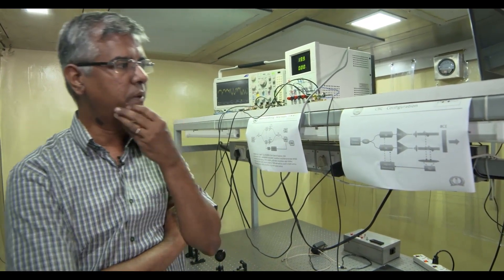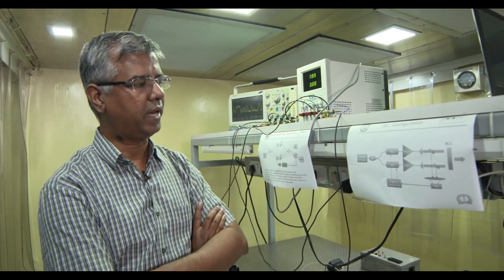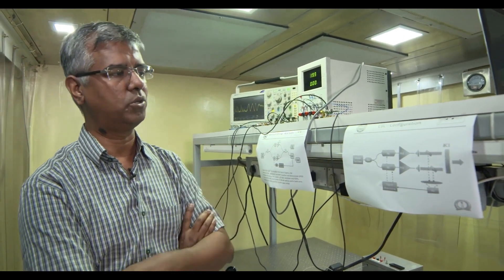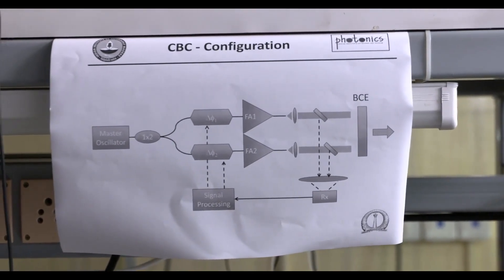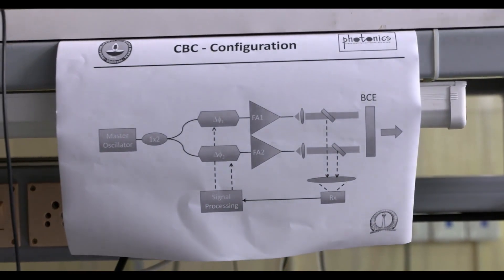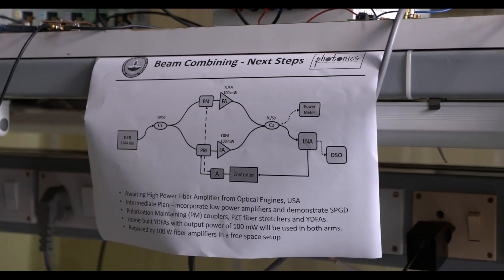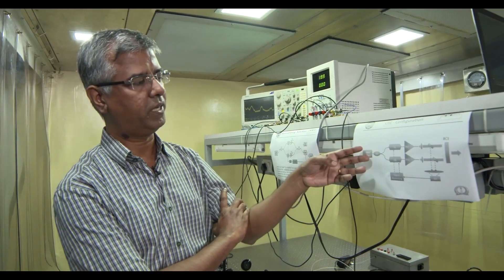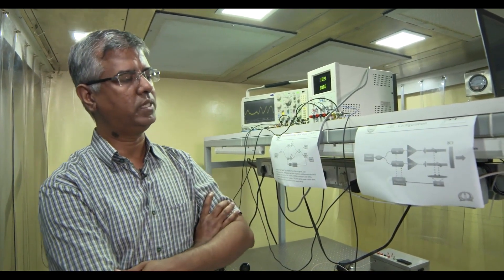So how do we achieve coherent beam combining? What we do is we take a master oscillator which is typically a narrow line width laser source, a semiconductor laser source, split it into multiple parts. Here just for the sake of proof of principle I am showing it as split into two parts. And then you can go through a phase manipulator. I will talk about why we need a phase manipulator in a second. But then you go through high power amplification. So you may have only tens of milliwatts of power, but through each of these amplifiers you can amplify to kilowatts of power.